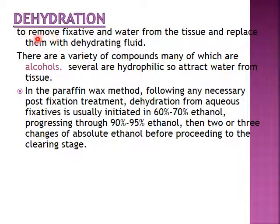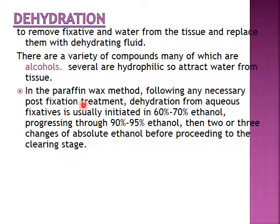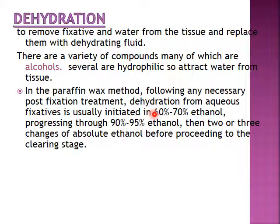The first step in tissue processing is dehydration — to remove fixative and water from the tissue and replace them with a dehydrating fluid. There are a variety of compounds, many of which are alcohols, which are hydrophilic and attract water from the tissue. In the paraffin wax method, dehydration is usually initiated in 60–70% ethanol, processing through 90–95% ethanol, then two or three changes of absolute ethanol before proceeding to the clearing stage.